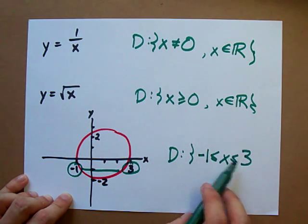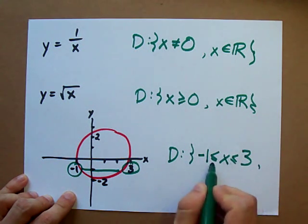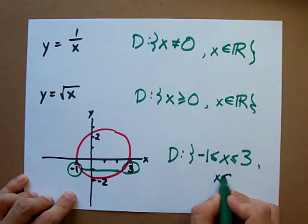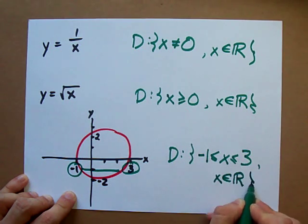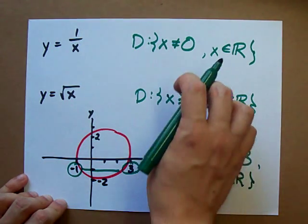X is anything in between negative one and three. You'll have to accept that this is the way that we write that. As long as this is satisfied, X can be any real number in that range. Notice we always end with this X∈R.